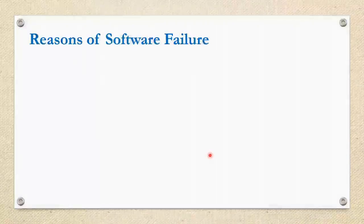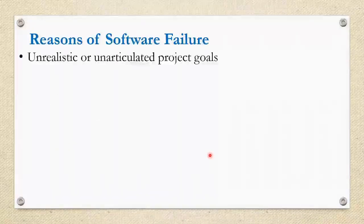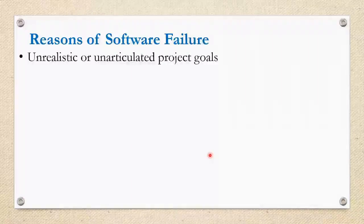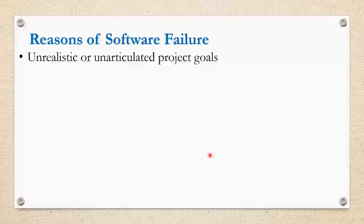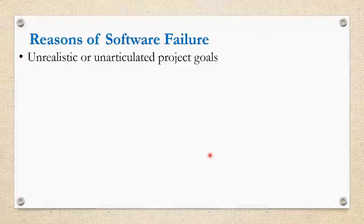Next, we'll see the reasons for software failures. The first reason is unrealistic or unarticulated project goals. Before beginning any software, it is very necessary to understand what the project goals are, what the software objectives are, and what is the purpose of developing the software. If you don't analyze and mention those properly, the project goal or objective — which is the main intention to develop the software — won't be clear, and there are chances of software failure.